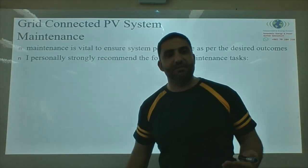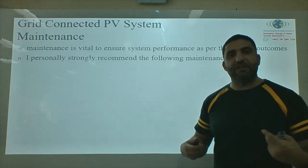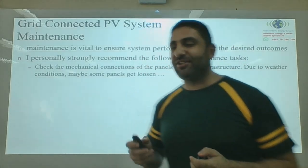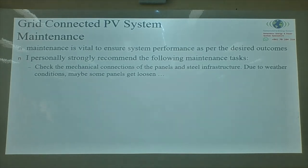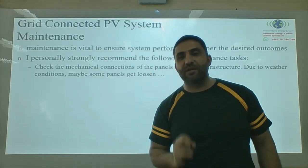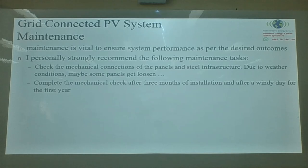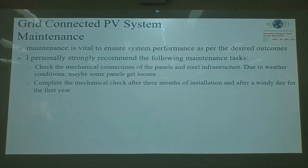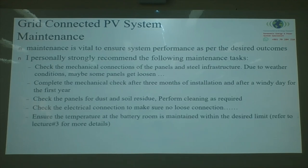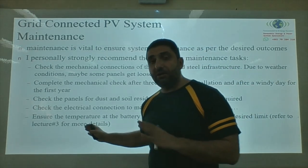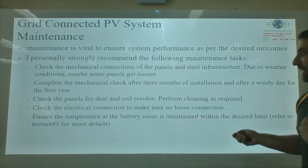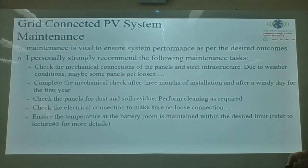Solar systems require very minimal maintenance apart from cleaning. Strongly recommended checks include: mechanical connections to the panels (loose screws after wind); perform a mechanical check after three months of installation or after a windy day in the first year; check panels for dust and soil residue and clean as required; check all electrical connections for looseness; and ensure battery temperatures stay within acceptable limits to avoid damage.